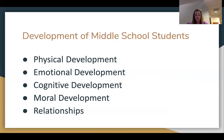During young adolescence, students are developing morally. Many different factors, such as feedback from others, observing others, and reflecting on their own experiences, help adolescents form these moral identities. Relationships are extremely important to middle school students. As teens' emotional maturity increases, it changes their relationships. Adolescents begin to turn to each other instead of turning to their families.